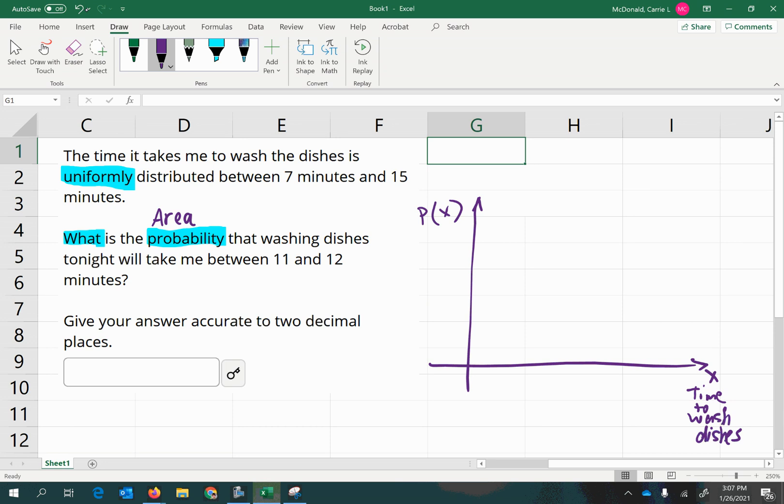And it's uniformly distributed, which means that it's just straight across for all values of x, the probability function. And I'm trying to draw straight, but because I have my monitor up and it's slippery, I'm having a hard time. There we go. Pretend that's a nice, pretty rectangular shape.